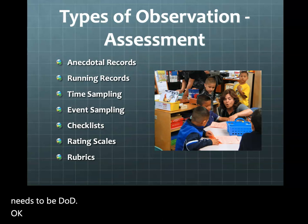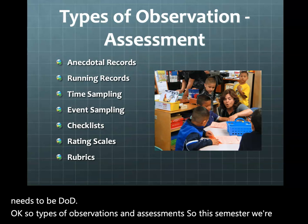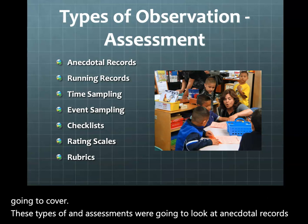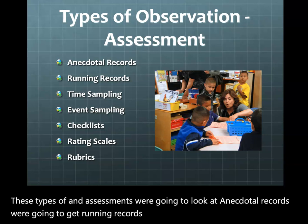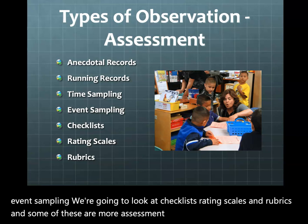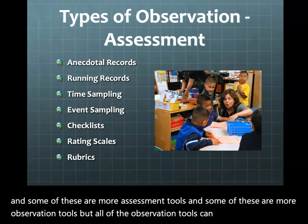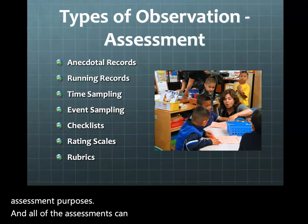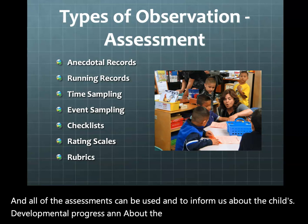This semester we're going to cover these types of observations and assessments: anecdotal records, running records, time sampling and event sampling, checklists, rating scales, and rubrics. Some of these are more assessment tools and some are more observation tools, but all observation tools can be used for assessment purposes. All of these assessments can inform us about the child's developmental progress and educational needs, informing our planning to help the child continue to make progress.